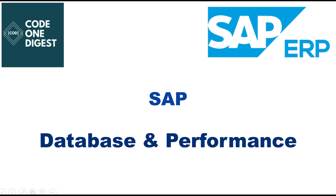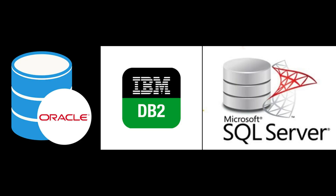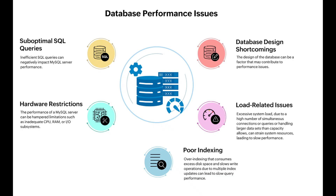First, Database and Performance. The most significant distinction between the two systems is the database they run on. SAP ECC can run on various third-party databases such as Oracle, IBM DB2, and Microsoft SQL Server. This traditional disk-based database structure can lead to slower data processing and reporting, especially for large volumes of data.